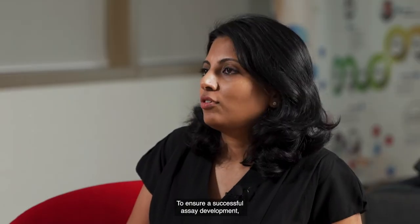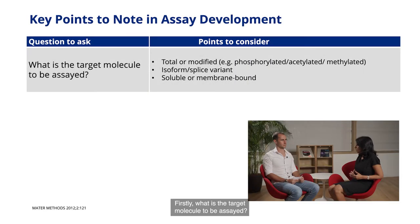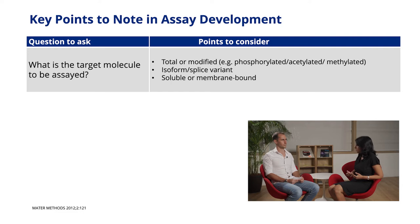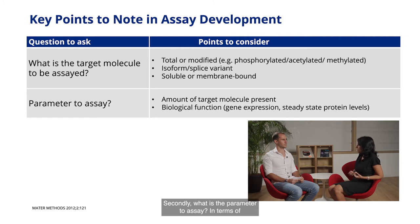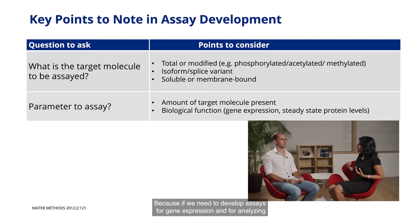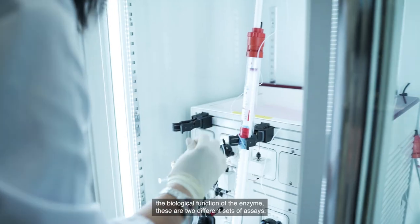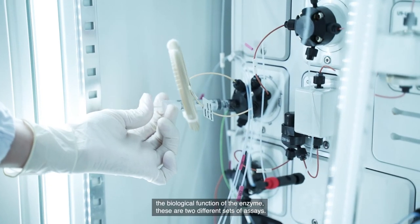What are the key aspects to be considered for assay development? To ensure a successful assay development, there are a few parameters to follow. Firstly, what is the target molecule to be assayed? Is this the total protein or a modified protein from a cell lysate? Is it an isoform or a splice variant of the protein? Secondly, what is the parameter to assay? When talking about proteins or enzymes, are we looking at the total amount of the protein or a post-translational modification? Because developing assays for gene expression versus analyzing the biological function of the enzyme requires two different sets of assays.